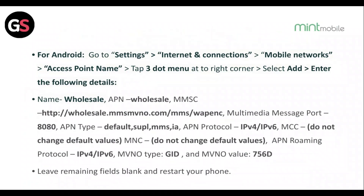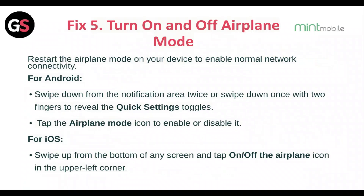For Android, go to Settings, then Internet and Connection, then Mobile Network, then Access Point Name. Tap on the three-dot menu at the top right corner, select Add, and enter the required details. Leave the remaining fields blank and restart your phone.